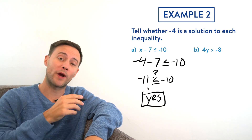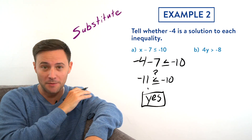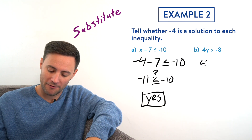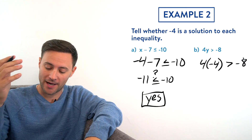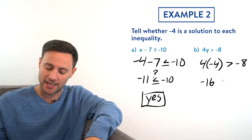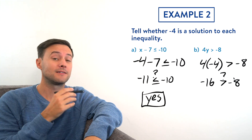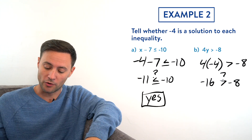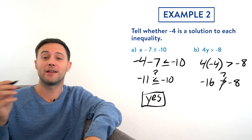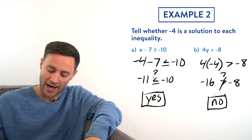Part b: 4y > -8. We check if negative four is a solution by substituting: 4 × (-4) = -16. Is -16 greater than -8? Negative sixteen is to the left of negative eight on the number line, meaning it's less than, not greater than, negative eight. So no — negative four is not a solution to that inequality.